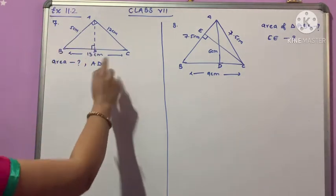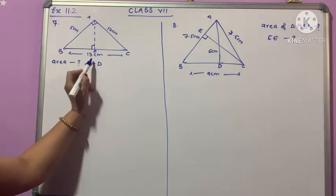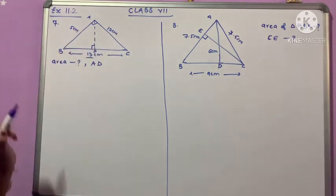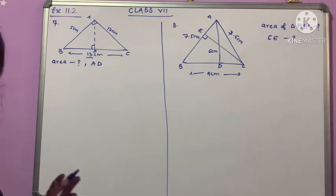Question number 7: ABC is a triangle given, AD is the height, BC is the base with measurement 13, AC is 12, AB is 5. This figure is given in the book if you want to see, you can check it from there.